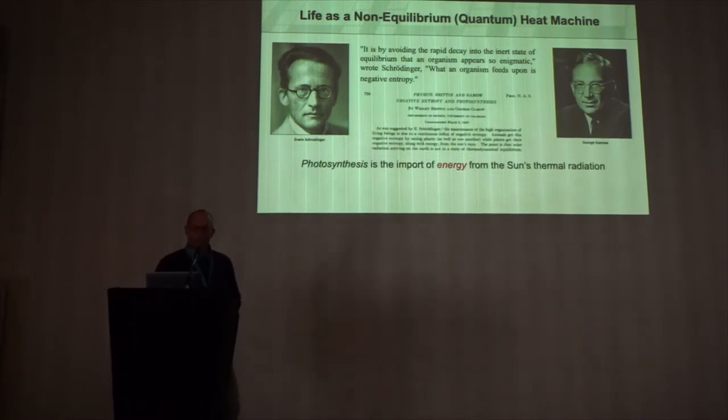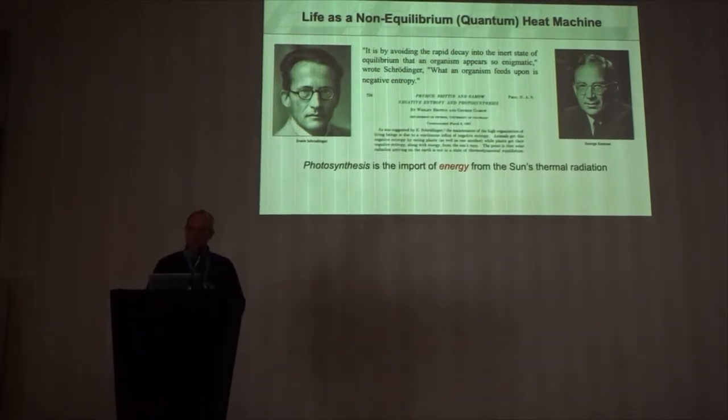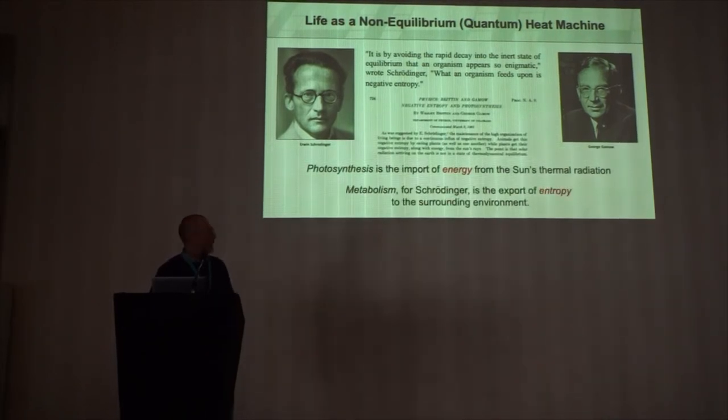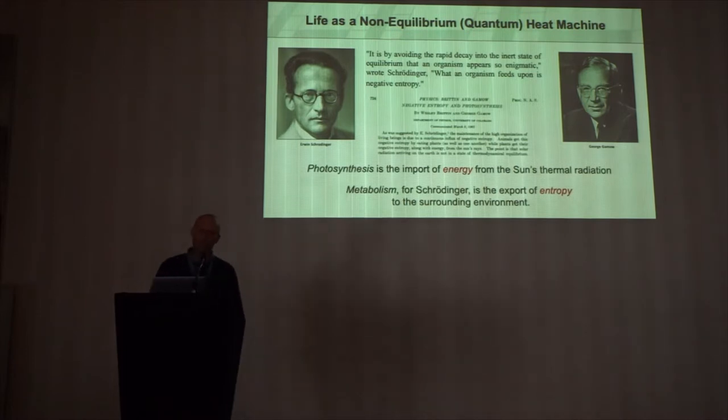So they broke this into basically two pieces. I'm going to talk about photosynthesis because I think this is a really important indicator of life on another planet. But they also, to Schrodinger, metabolism was another important piece.